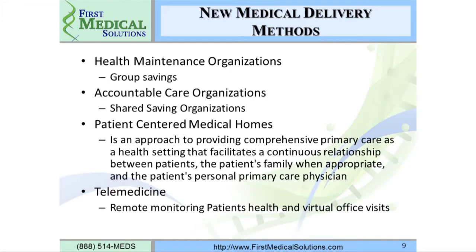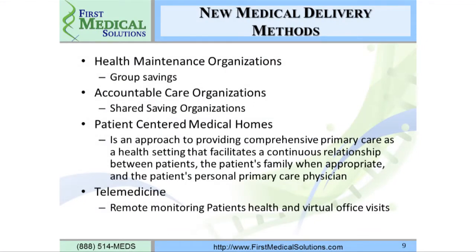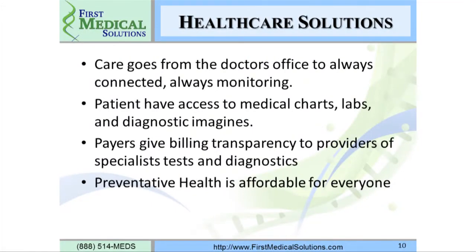The new direction of medicine is going through HMO models — a group savings opportunity. We also have accountable care organizations, which are shared savings organizations. The real difference is in an HMO model the government goes through a health plan or insurer, while with an ACO they go directly through physician groups to manage care and share cost savings. Patient-centered medical homes are comprehensive primary care settings allowing continuous relationships between patients — sometimes extended-stay or extended-living facilities with health care providers on site. Telemedicine plugs right in to remotely monitor all patients, enabling virtual office visits from home.